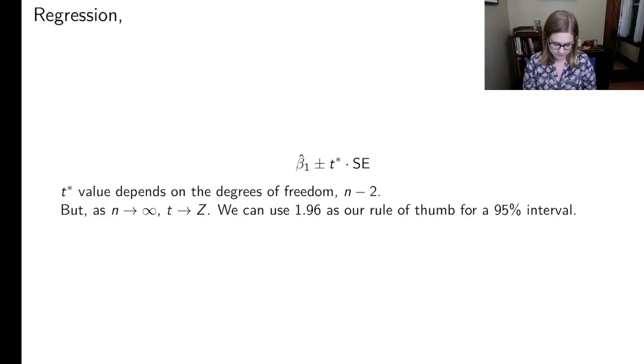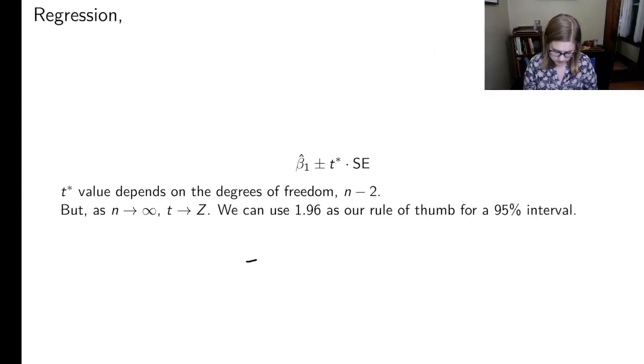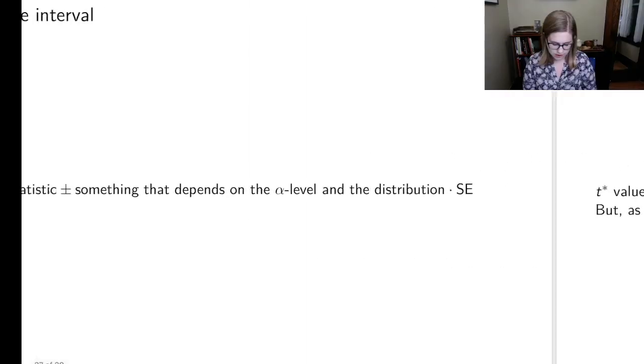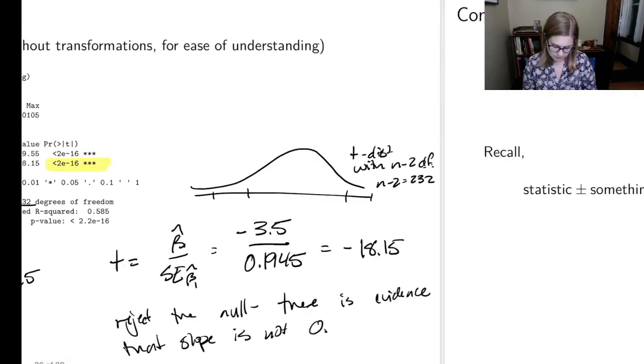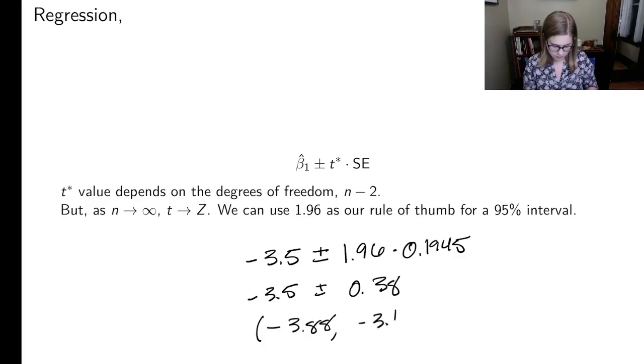So let's do it with the cars data. So my slope was negative 3.5, negative 3.5 plus or minus, and I'm going to use 1.96 just to be easy, times the standard error, which was 0.1945. So that's negative 3.5 plus or minus 0.38. Negative 3.5 minus 0.38 should be minus 3.88. And negative 3.5 plus 0.38 is negative 3.12.